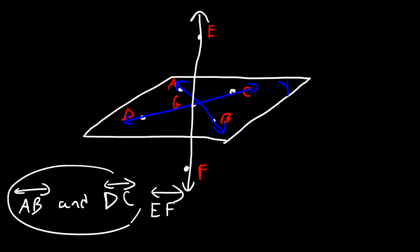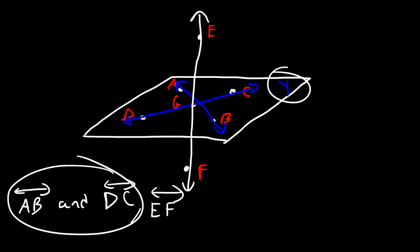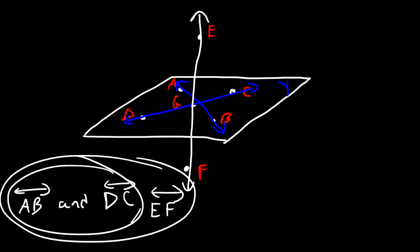AB and DC are coplanar lines — they exist on plane Y. But once you add EF to the mix, then it's considered to be non-coplanar lines because they don't share the same plane.